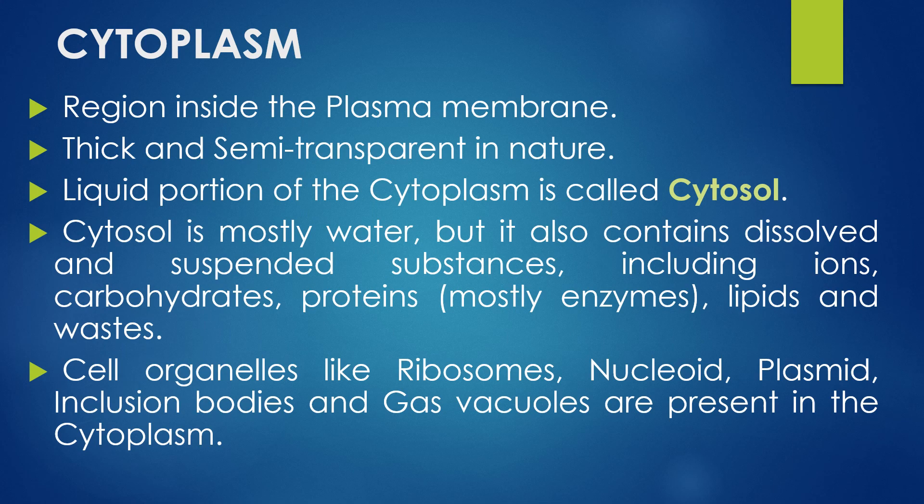The region present within the plasma membrane is called the cytoplasm. The cytoplasm is thick and semi-transparent in nature. It contains a liquid portion called the cytosol, which mainly contains water and some dissolved and suspended substances including ions, carbohydrates, proteins (particularly enzymes), lipids, and waste. The important organelles of the bacteria — ribosomes, nucleoids, plasmids, inclusion bodies, and gas vacuoles — are present in the cytoplasm.